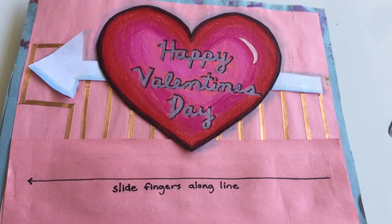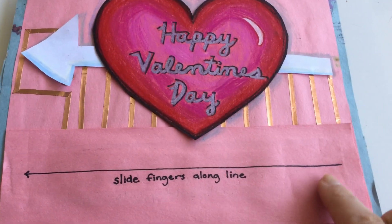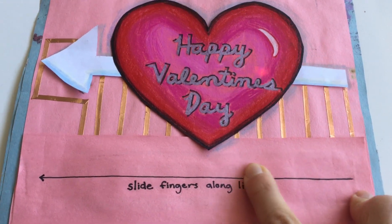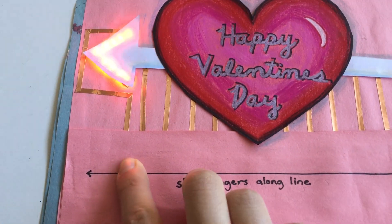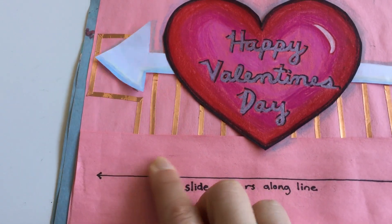This is an example of an animated circuit in action. Here we have a card made by one of my students, and as I slide my finger along this button, you can see that lights will illuminate until I reach the end and the arrow lights up.